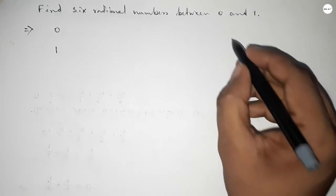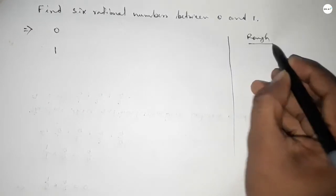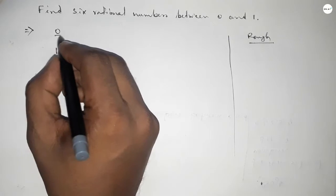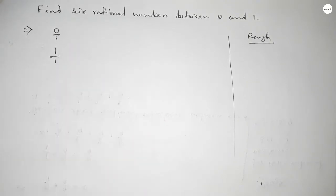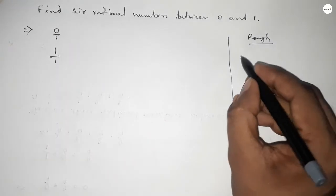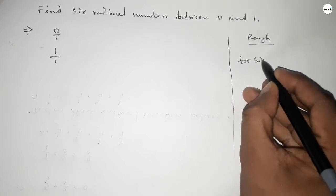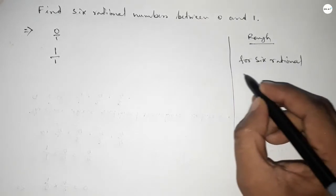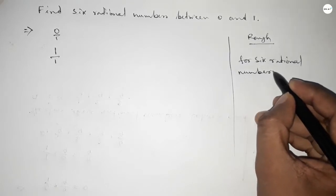First of all, write down 0 and 1. We can write 0 as 0/1 and 1 as 1/1. Now, for finding six rational numbers between any two numbers, we have to follow this method.